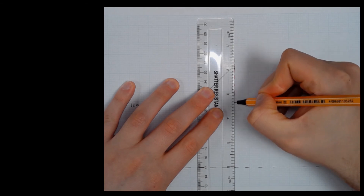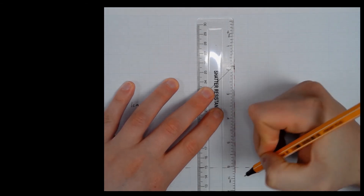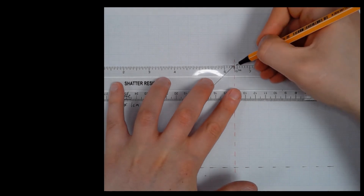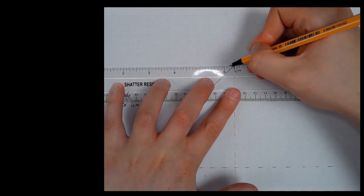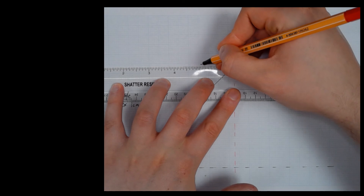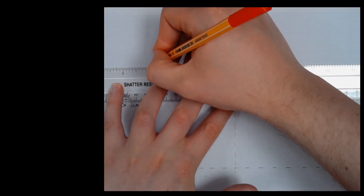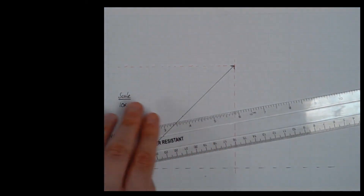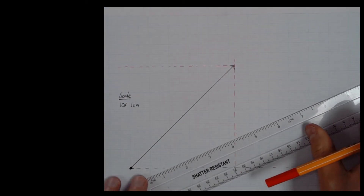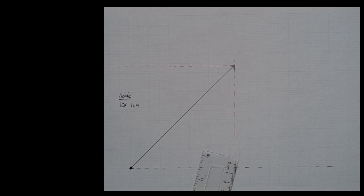I then need to split this force into its two component parts — a horizontal component and a vertical component. To do that, I'm going to need to draw some dotted lines. Again, the graph paper is a real help here.